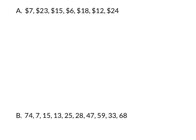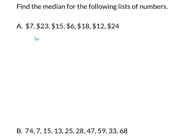For example A, I'm going to cross them off as we go along. My smallest number is 6, then 7, 12, 15, 18, 23, and 24. Now that we have them organized, we can find our middle value, which is 15. So $15 is our median.